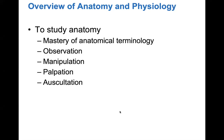To study anatomy you need to master anatomical terminology. There are a lot of terms and structures, and that is essentially straight-up memorization. Observation is important — look at as many images as possible from as many views as you can. Manipulation means examining structures in the lab; when we do bones, look at them articulated in the full skeleton and disarticulated in the boxes. Palpation is feeling these structures, and auscultation is listening, for example to a heartbeat.